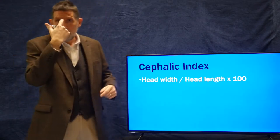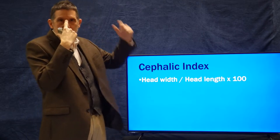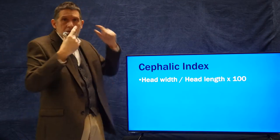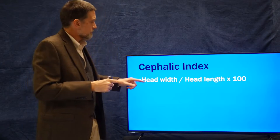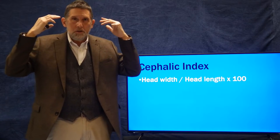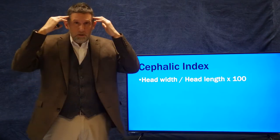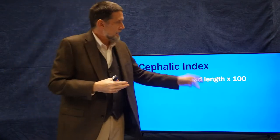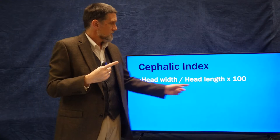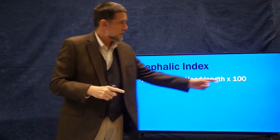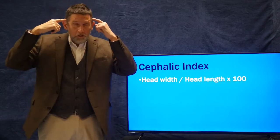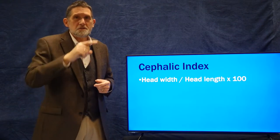I want to do a little digression into talking about the cephalic index, because we're going to be using this in the course quite a bit. The cephalic index is defined by head width — from ear to ear — divided by head length, which is from the top of your nose to the back of your head, times 100. If you have a head width equal to 100 millimeters and a head length of 100 millimeters, those divide to 1, times 100 equals 100. That would be a perfect circle.